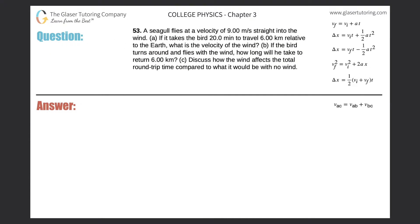Number 53: a seagull flies at a velocity of 9.00 meters per second straight into the wind. If it takes the bird 20 minutes to travel six kilometers relative to the earth, what is the velocity of the wind? This problem sounds fairly innocuous but it's actually quite challenging because there are a couple of things left out.